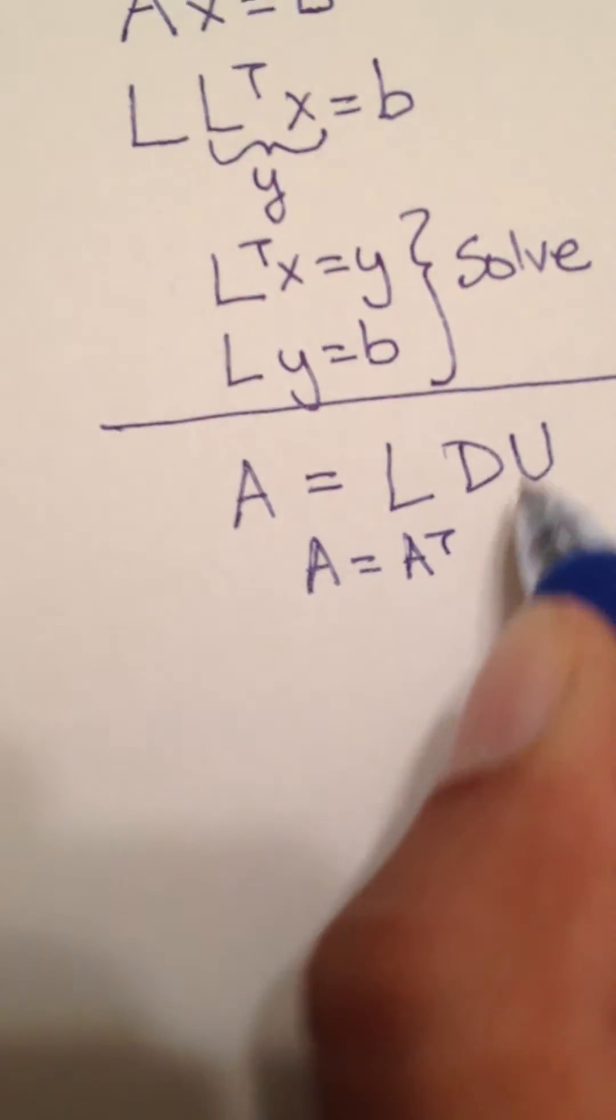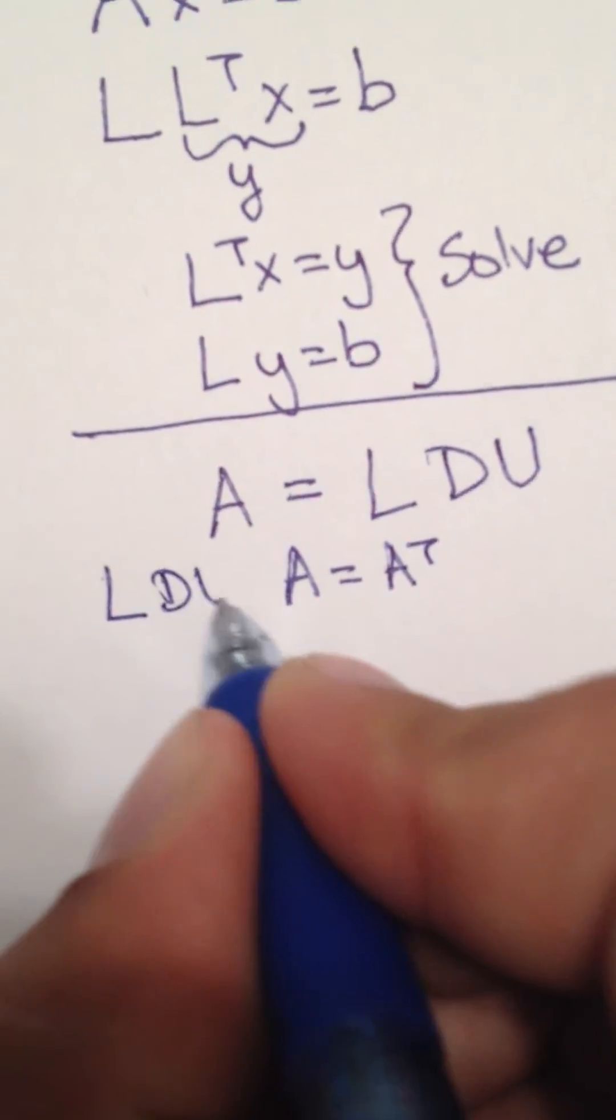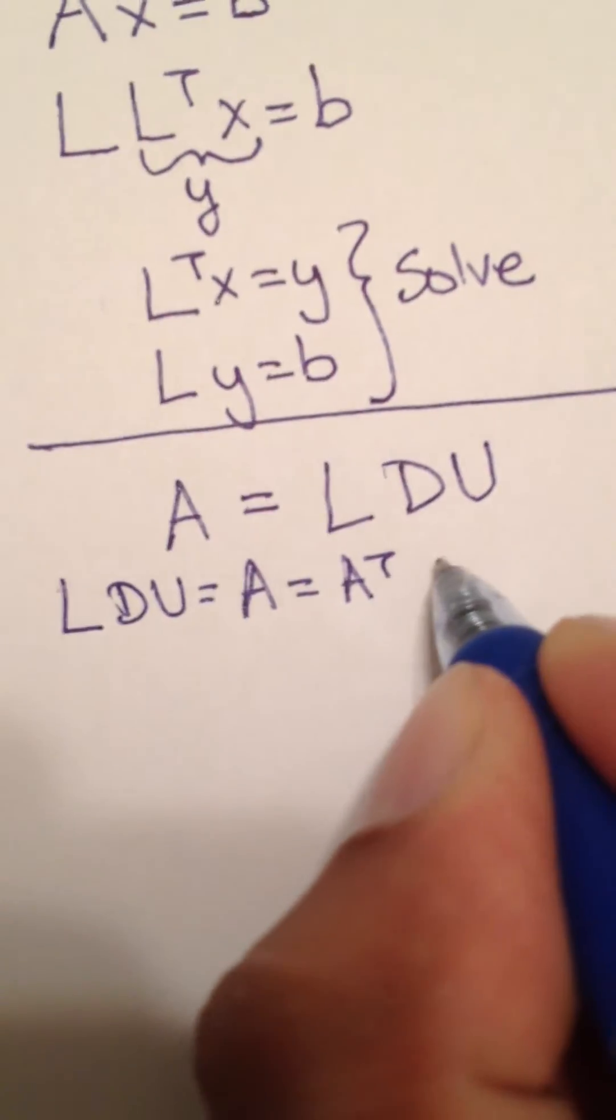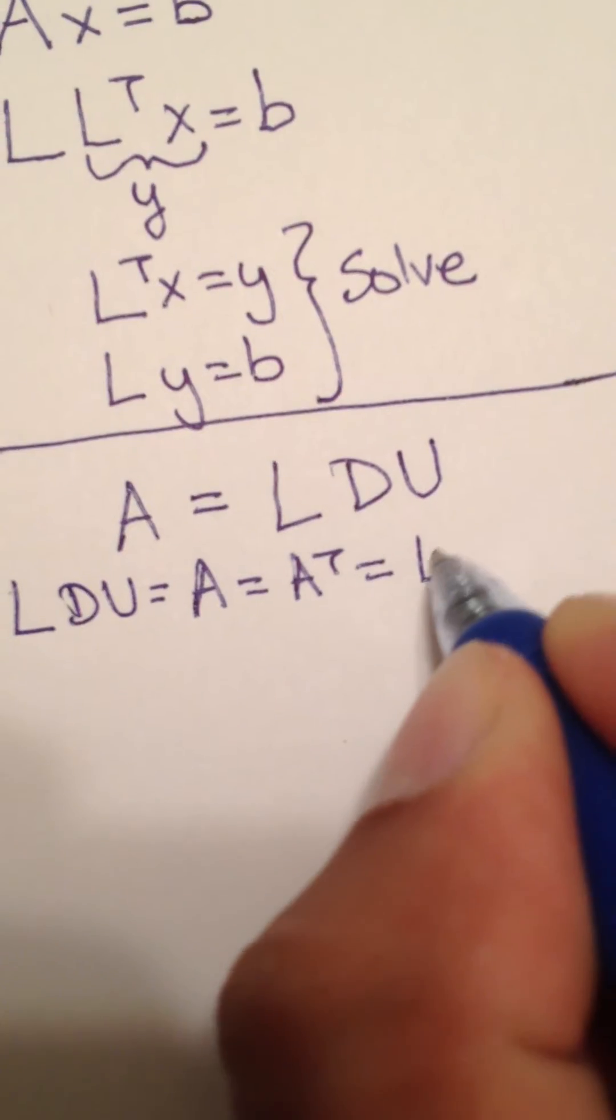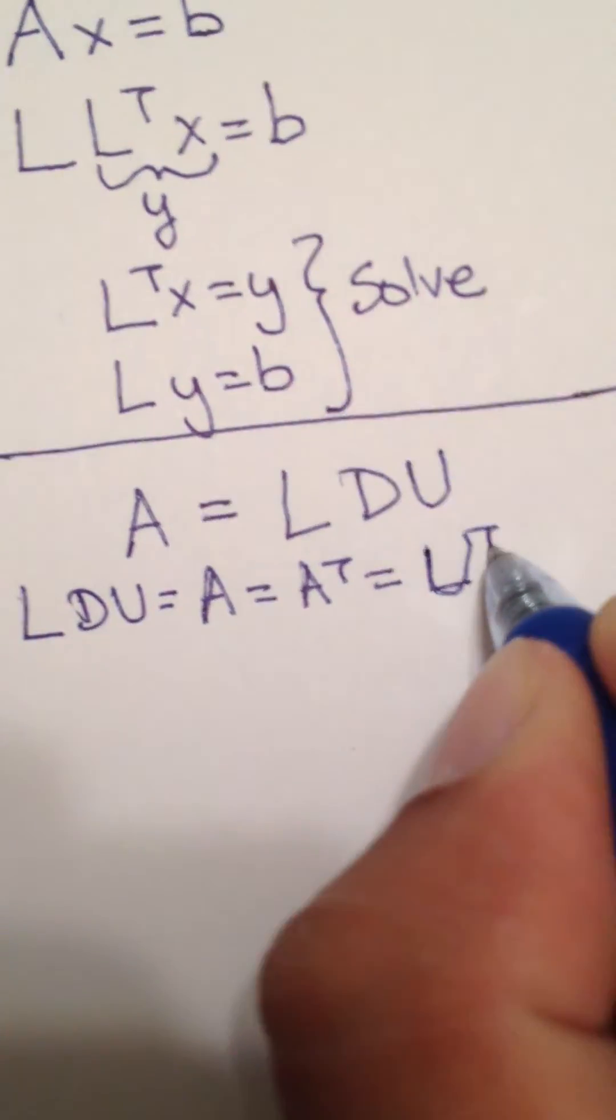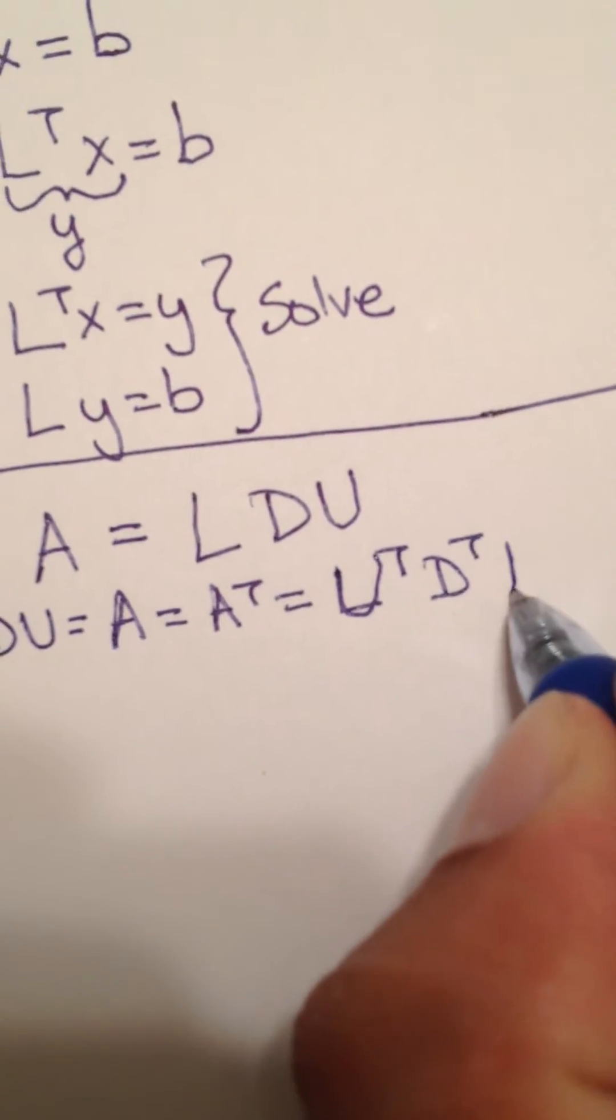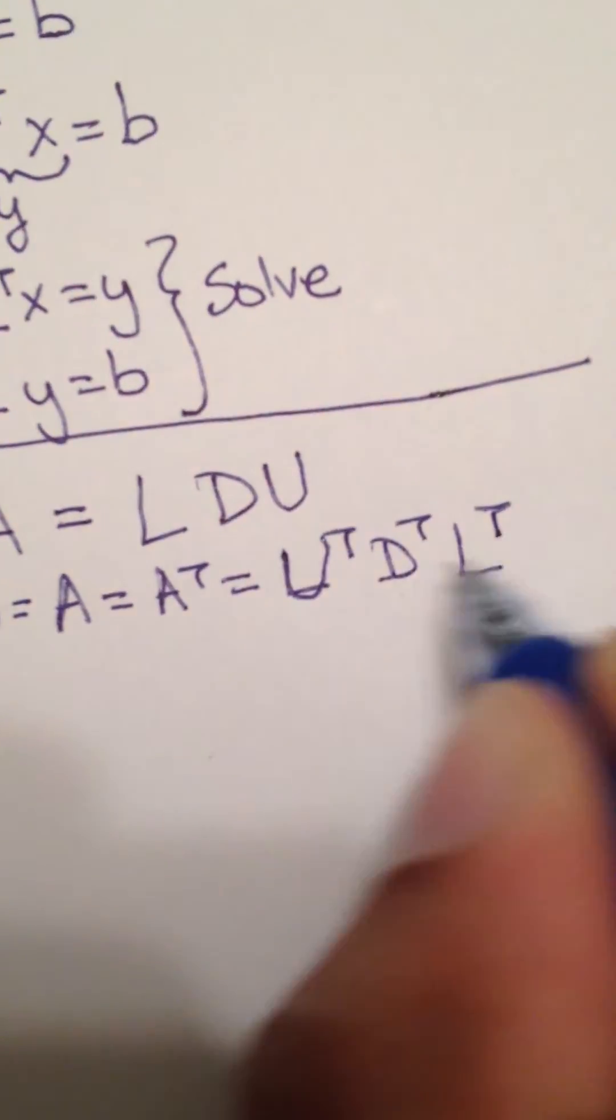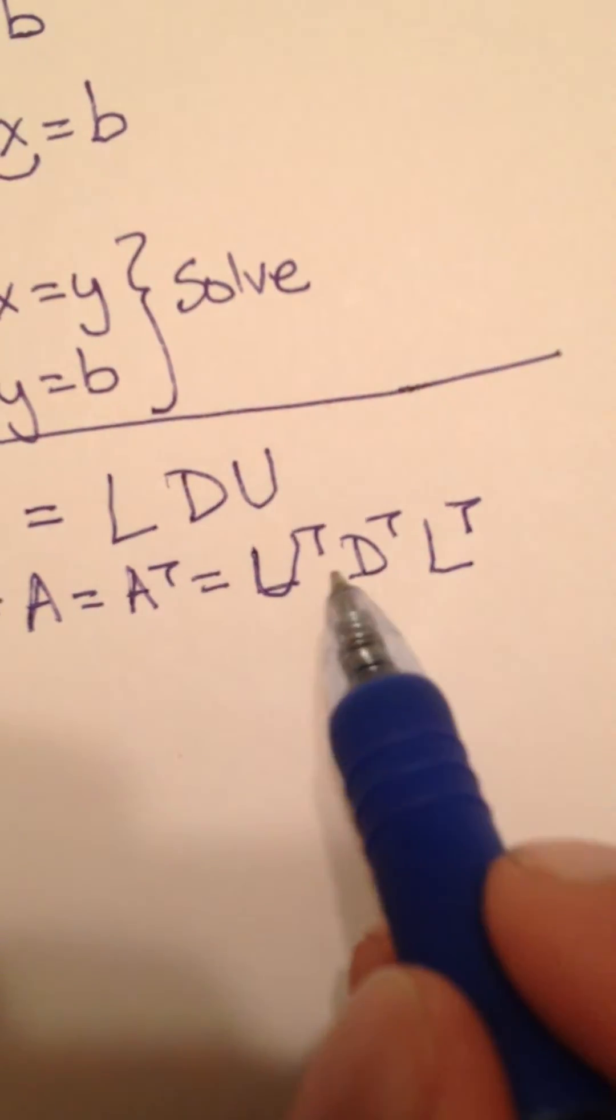And now, since A is equal to L D U, this equals U transpose D transpose L transpose. That's how you transpose a matrix like L D U. You reverse it and you transpose each one.